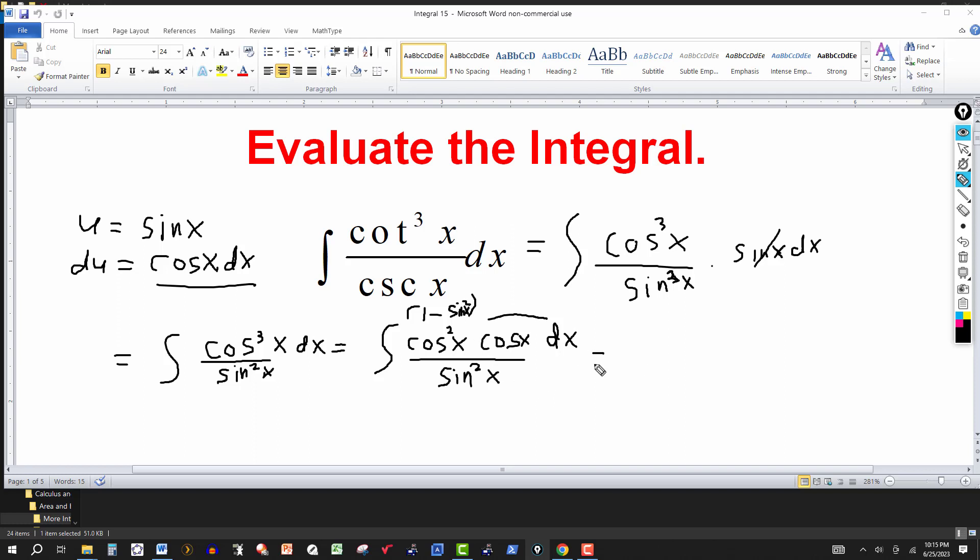So this is going to be equal to the integral of, instead of cosine squared of x, I got 1 minus sine squared of x. So this then can be written up here then as 1 minus u squared. And then the denominator, I have the sine squared and sine of x is u. So this would just be u squared dx. Sorry, du.